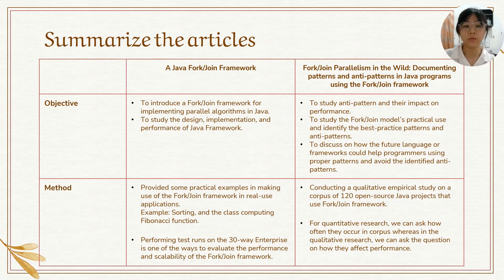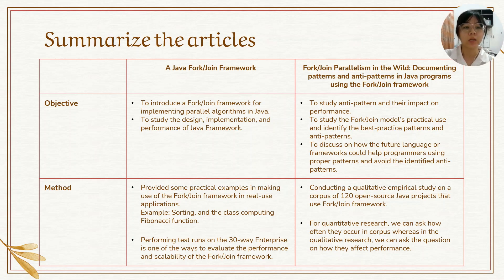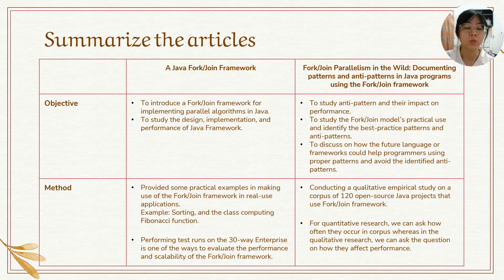For the objectives, there are two objectives in the first article: to introduce a Fork/Join framework for implementing parallel algorithms in Java, and to study the design, implementation, and performance of the Java framework. In the second article, the objectives are to study anti-patterns and their impact on performance, to study the Fork/Join model's practical use and identify best practice patterns and anti-patterns, and to discuss how future language frameworks could help programmers use proper patterns and avoid anti-patterns.